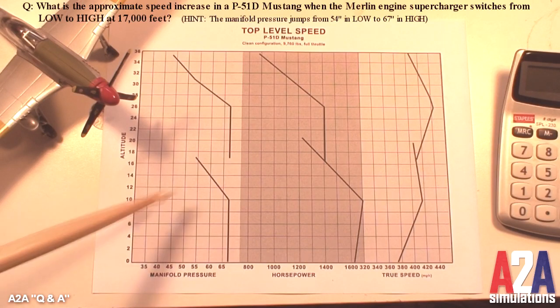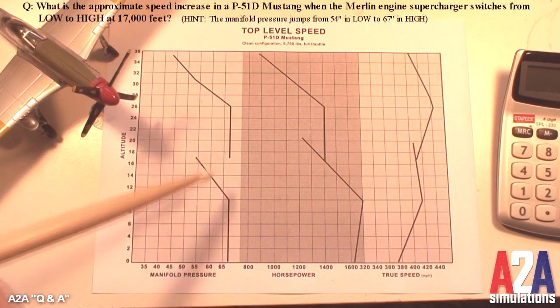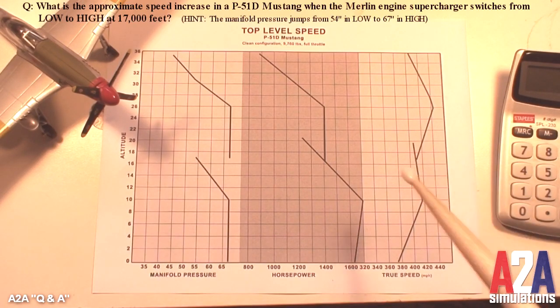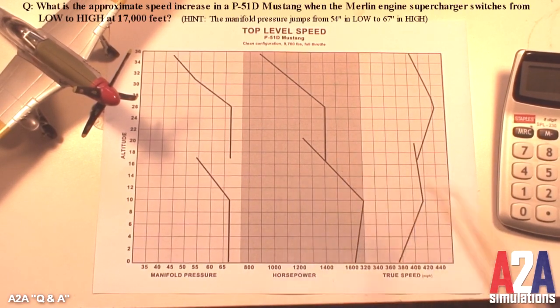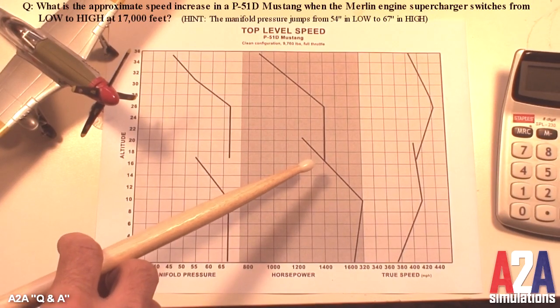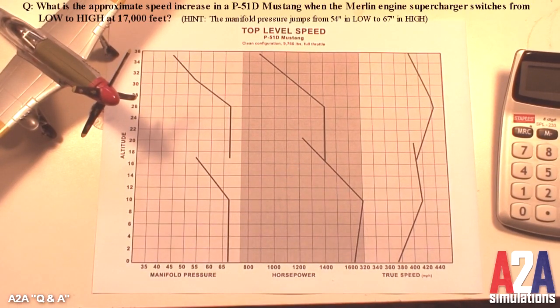When we switch to the high gear, we're now producing 67 inches, but we are producing the exact same power. That is the break even point. This is the point right here at which the cost of running that supercharger at a very high speed is equal to the gains that we're getting from the increased manifold pressure.